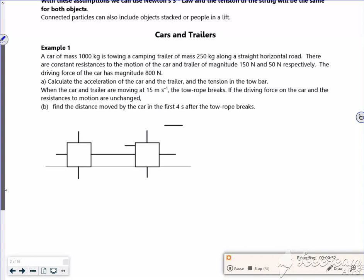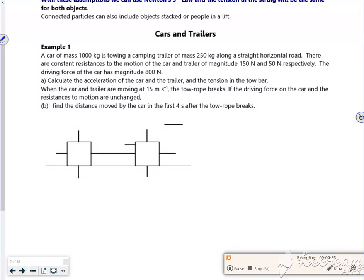Right, so let's have a look at this question here. A car of mass 1000 kilos is towing a trailer. So let's assume this is the car here. I'm driving forwards, it's got a mass of 1000 kilos, so I've got 1000g acting down. I have a normal reaction for the car acting up. It's got a trailer of 250 kilos. So here's my trailer. That's 250g and that's a normal reaction for the trailer.